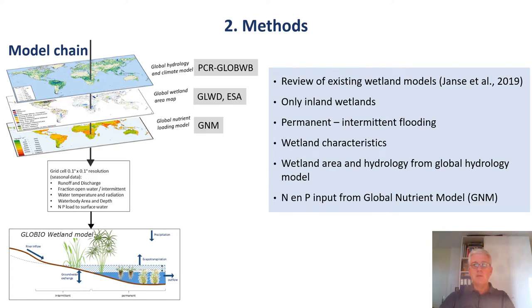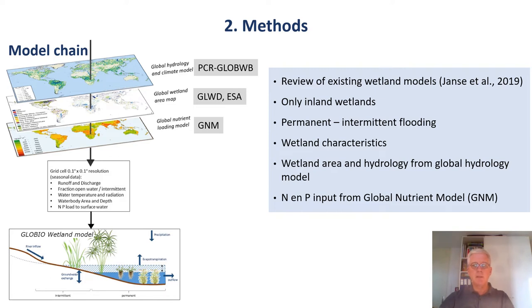So how did we do this? First, we reviewed wetland modeling studies that had been done before and we defined what we wanted our model to do. This was published in our paper in 2019. We decided, for practical reasons, to include only inland wetlands. The wetland model needed to be driven by a hydrological model which would predict wetland area, water levels, and flow. For this we used the grid-based global hydrology model PCR-GlobWB, which was developed at Utrecht University. We used global databases, particularly the global lakes and wetlands database, to verify the model estimates. We also used the global nutrient model GNM, which is part of the image modeling framework of PBL, to quantify nutrient input into the grid cells based on global land use data. In this way, we could estimate the water and nutrient balance of each cell and use these to drive the wetland model.